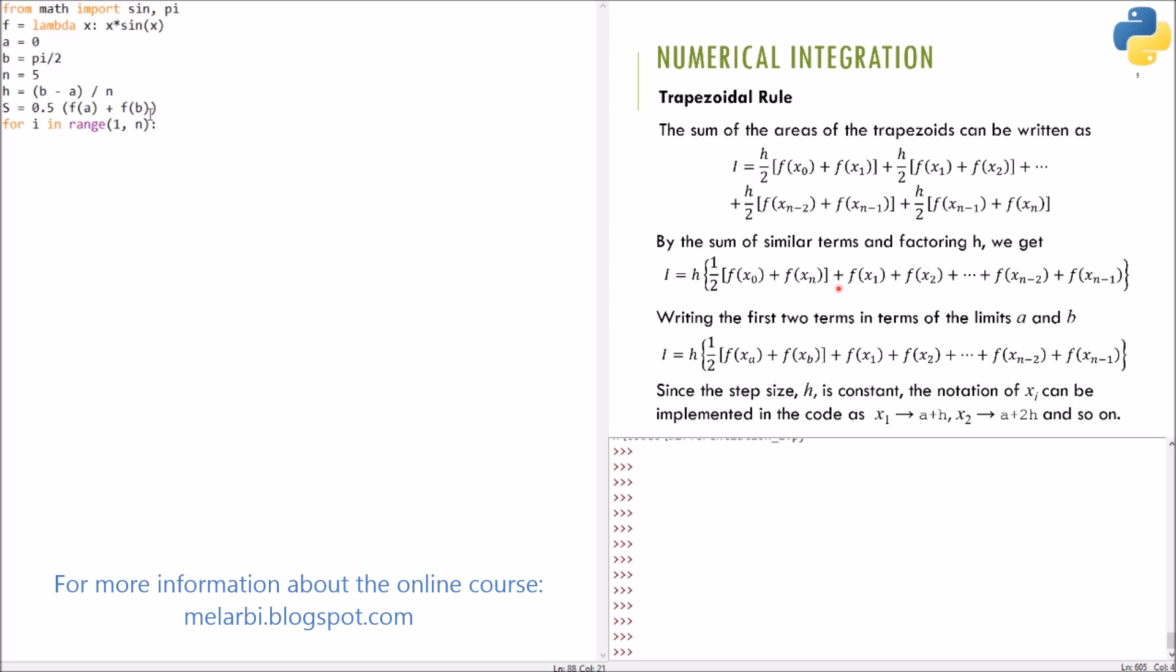We should always be aware about this thing, that this loop will go from 1 to n minus 1, because the default step size is 1. So, the range will be from 1 to n minus 1. S will plus equal, this is summation, f of a plus i by h.